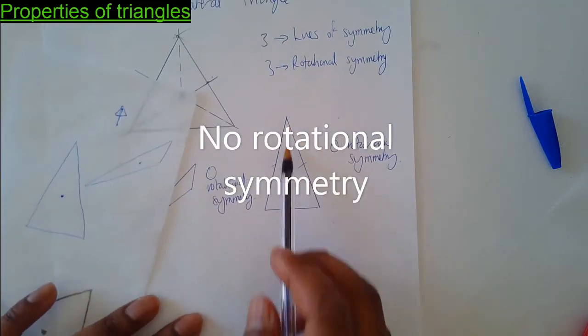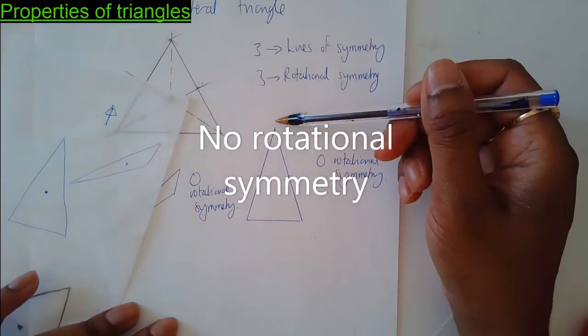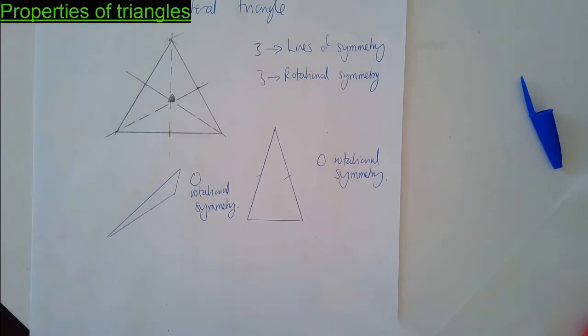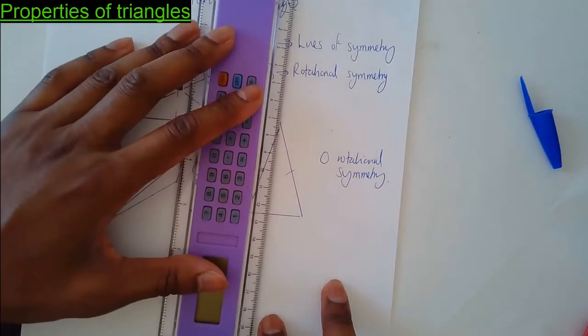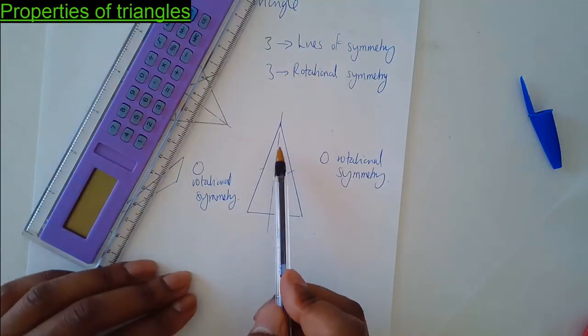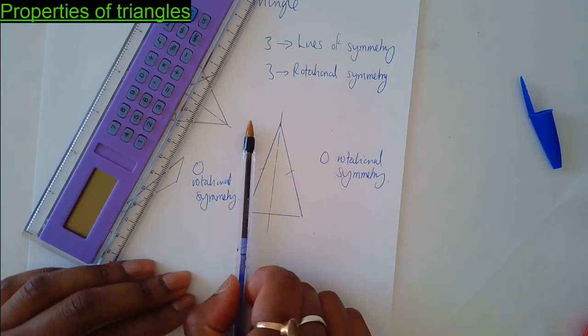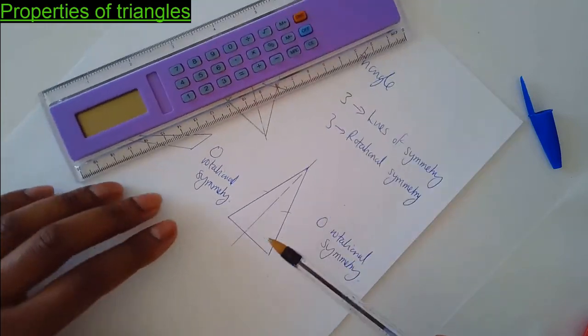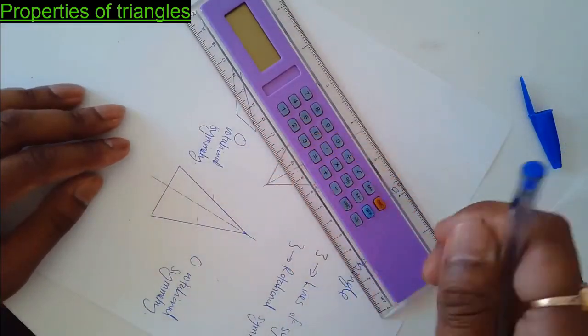If I just go back to this one. There is a line of symmetry for this one. Obviously it goes right there in the middle. Basically everything on the left-hand side of the line of symmetry matches everything on the right-hand side. But you might think there's a line of symmetry this way. Well there isn't.